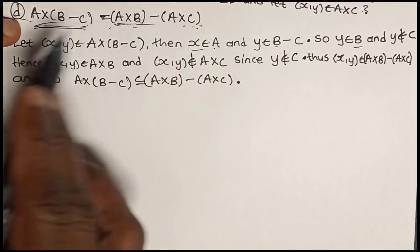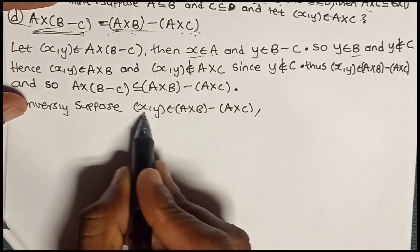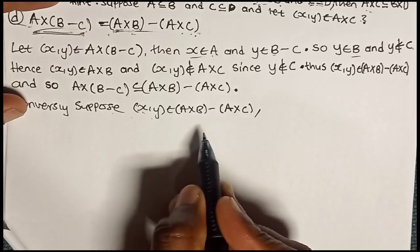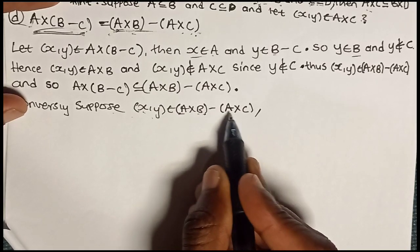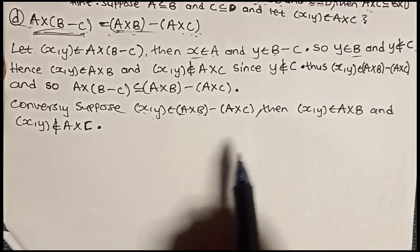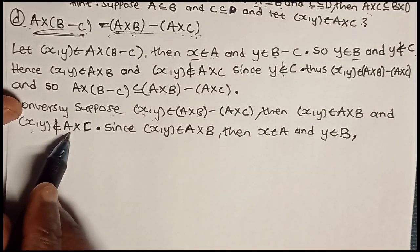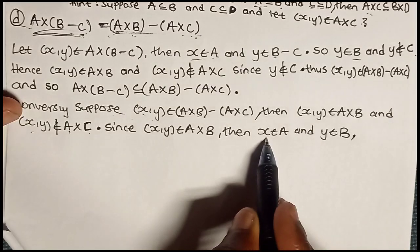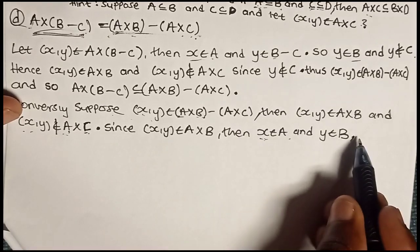Conversely, let a pair (X, Y) be an element of (A cross B) minus (A cross C). We show that (X, Y) is an element of A cross (B minus C). Suppose (X, Y) is an element of (A cross B) minus (A cross C); then (X, Y) is in A cross B and (X, Y) is not in A cross C. Since (X, Y) is in A cross B, then X is in A and Y is in B. And since (X, Y) is not in A cross C, Y is not in C, because we already know X is in A — the only reason (X, Y) is not in A cross C is that Y is not in C.